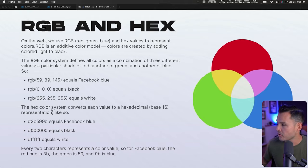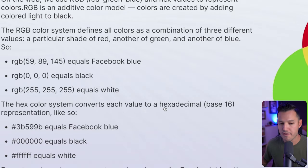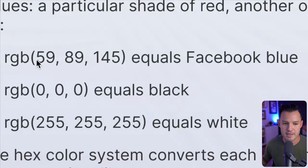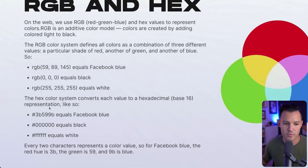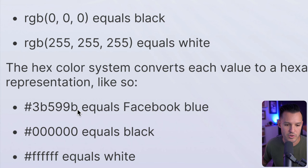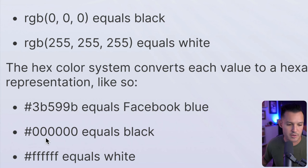The hex color system converts each RGB value into a hexadecimal representation. So for instance, that Facebook blue — we don't use the RGB inside of Figma, we use the hex value. It always starts with a hashtag, followed by six characters. There's your Facebook blue. And 000000 equals black.